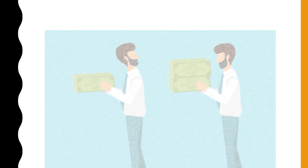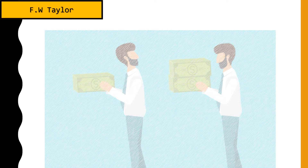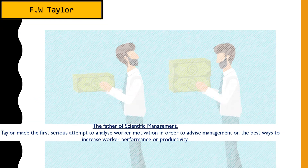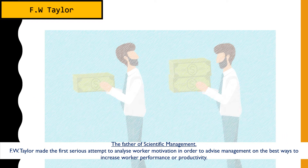Now let's talk about Frederick Winslow Taylor — from here on we'll call him Taylor. Businesses called him in to analyze factories and determine the root cause of inefficiency. Inefficiency affects productivity and the amount of work people can do. He was asked to find out why people were not productive and not working as well as they should.